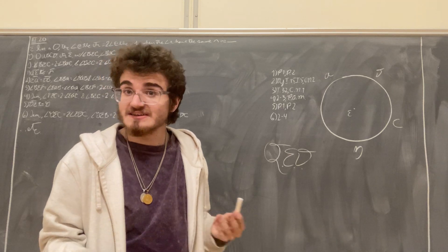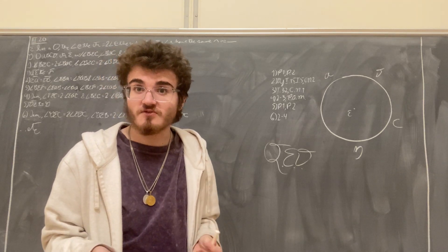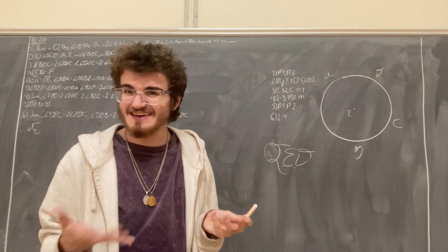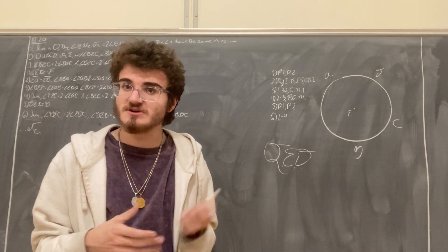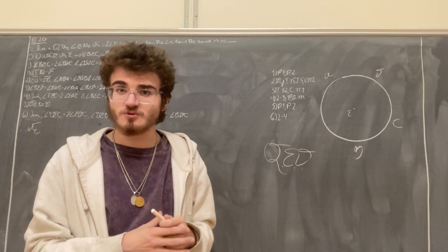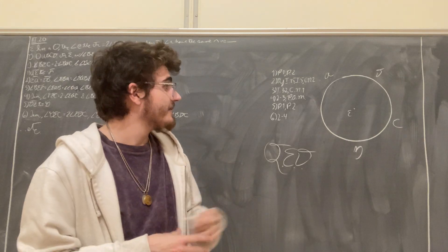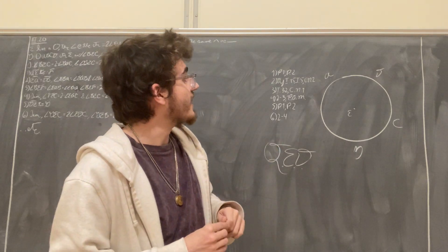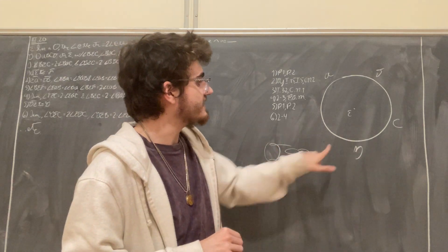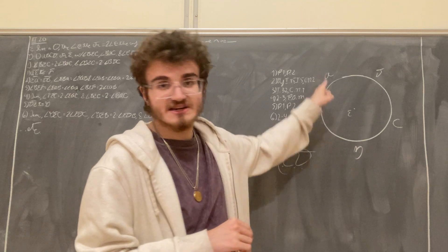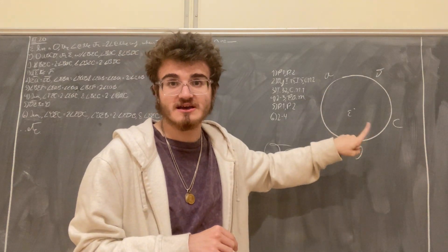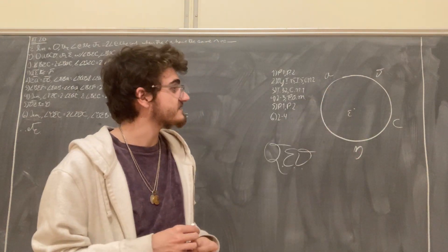And because of that difference, the proofs are slightly different, so that's why Euclid has to do this twice over, because there are two cases of the angle which stands on this arc on the circumference.